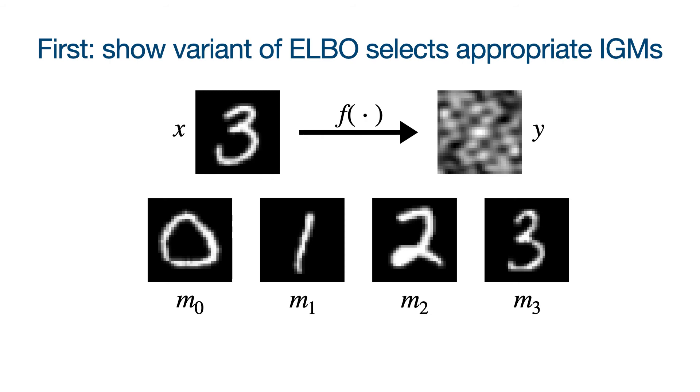For our first contribution, we show that a variant of the evidence lower bound, or ELBO, can help select image generation models from noisy measurements. We show in the paper that a variant of the ELBO, called the ELBO proxy, can be used as a criterion to select the correct model.